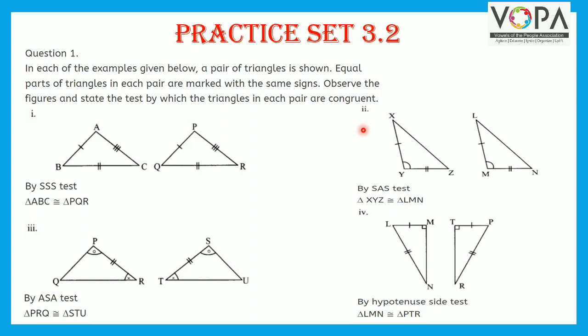Second, in this figure, side XY is congruent to side LM, side YZ is congruent to side MN, and the included angle Y between these two sides is congruent to the included angle between the corresponding two sides. Therefore, triangle XYZ is congruent to triangle LMN by SAS test.